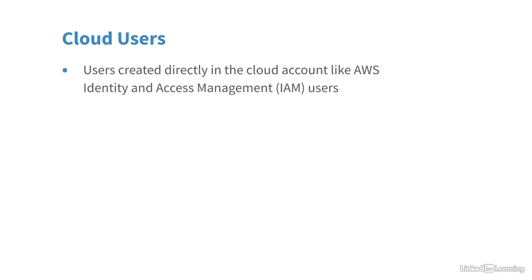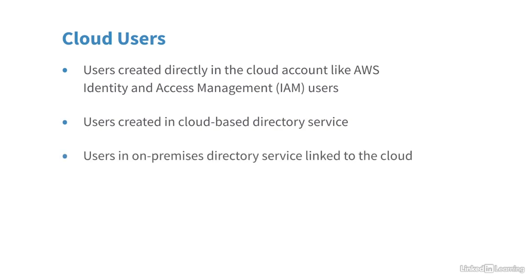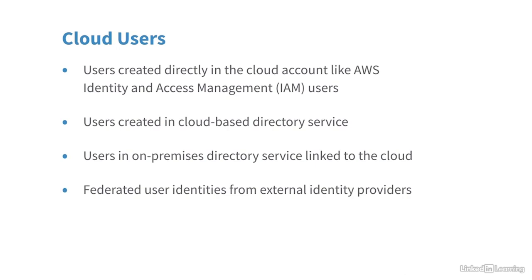Users can be created in a cloud-based directory service, or users in an on-premises directory service can be linked to the cloud. For example, if you have Microsoft Active Directory in an on-premises network, you can link it to the cloud so users can continue using their familiar on-premises credentials to access cloud-based applications. You can also work with federated user identities from external identity providers — such as when you sign into a web app and are prompted to sign in with your existing Google, Facebook, or Apple account. That's identity federation, where a trusted third party is used for authenticating to apps.